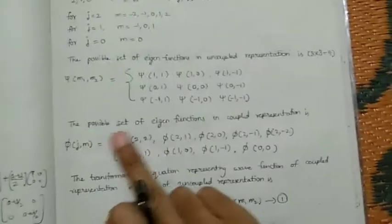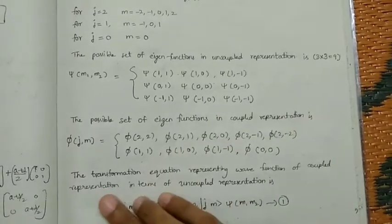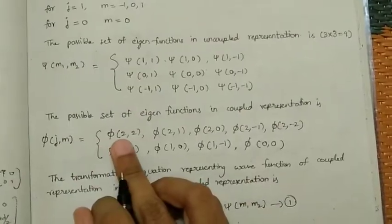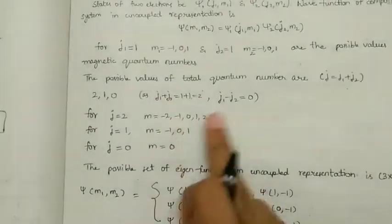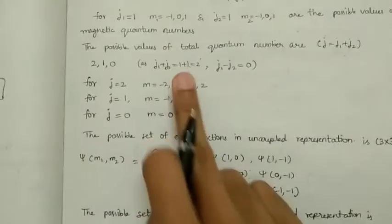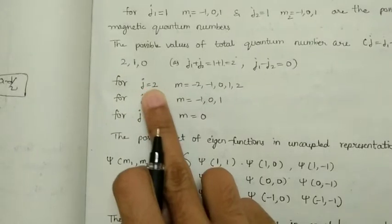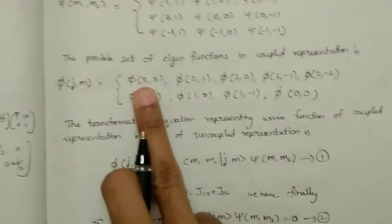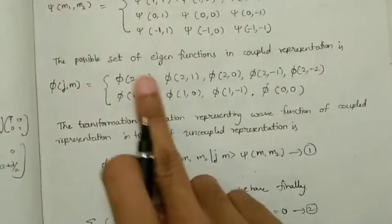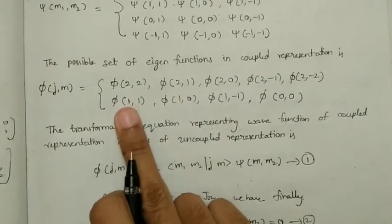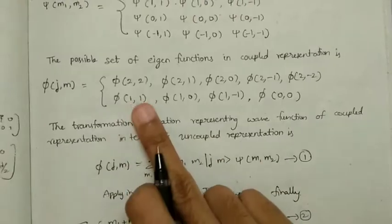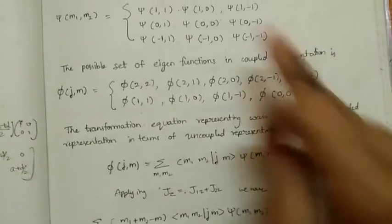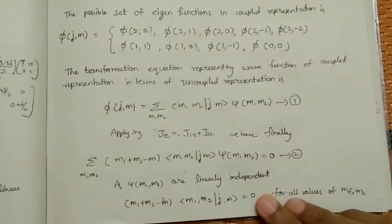In the coupled representation, for a given value of j there are also 9 possible combinations. When j=2, m values are 2, 1, 0, -1, -2 (five states); when j=1, m values are 1, 0, -1 (three states); and when j=0, m equals 0 (one state). That gives 5+3+1=9 possible combinations total.